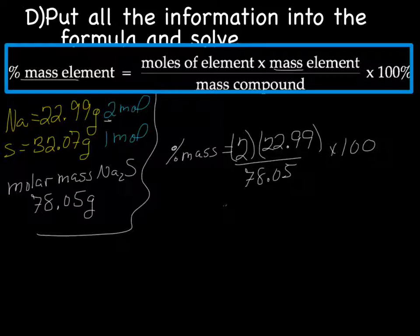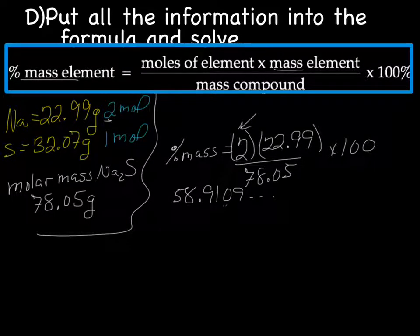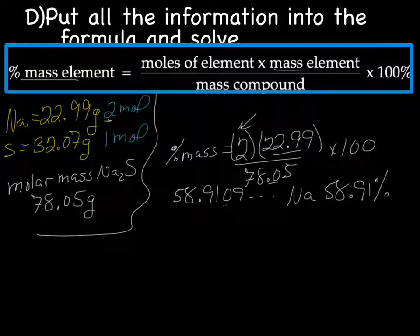divided by the mass of the compound, molar mass of Na2S, and we got 78.05 multiplied by 100. And that gave me 58.9109 percent. We don't count the moles as sig figs, it's just a counting. So we look at the other numbers, and so we've got 4 and 4. So our final answer is going to be Na is 58.91 percent of the mass of Na2S.